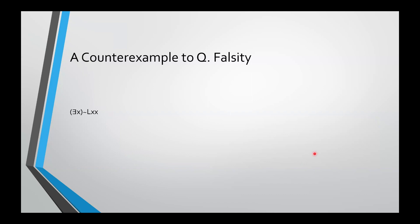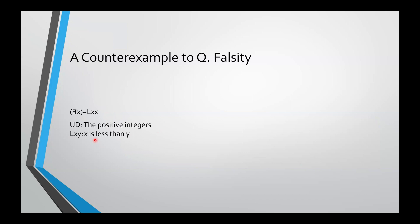You can also construct counterexamples to quantificational falsity. Here you just want to find a single interpretation on which the sentence is true. We'll use another simple mathematical example: the universe of discourse is the positive integers, and Lxy means 'x is strictly less than y.' What this sentence means, then, is that no positive integer is strictly less than itself. This is true, which means this sentence is not quantificationally false.